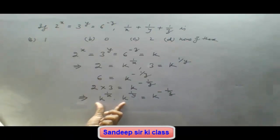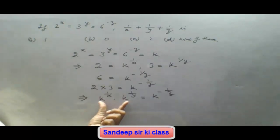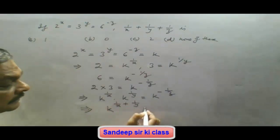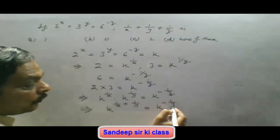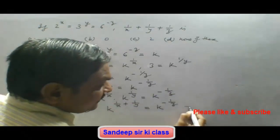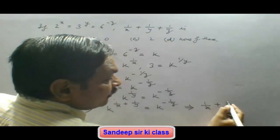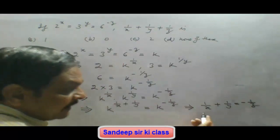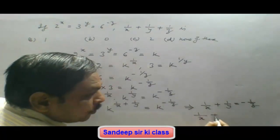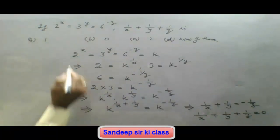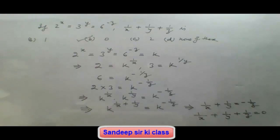The left-hand side has base k, so in multiplication powers are added: k^(1/x + 1/y) = k^(-1/z). Since the base is same on both sides, powers are equal: 1/x + 1/y = -1/z. Bringing -1/z to the left gives 1/x + 1/y + 1/z = 0. So option B is correct, and the value is 0.